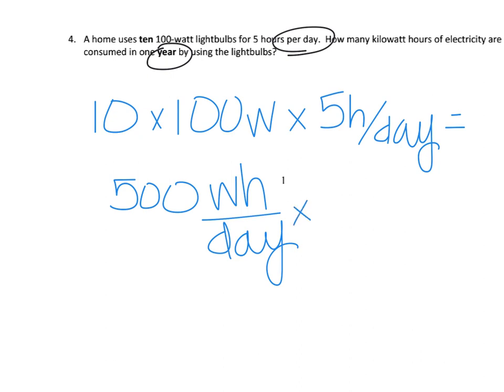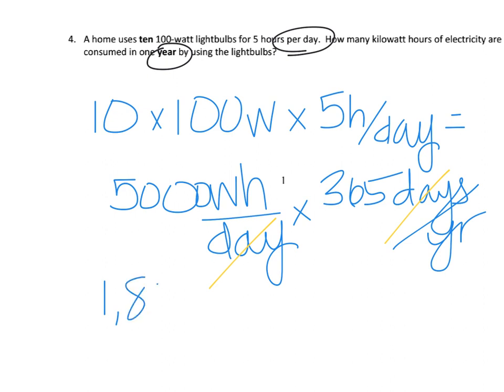So we have to multiply by—oops, sorry, I forgot a zero—it's 5000, not 500, times 365 days per year. And so our days cancel. When we do our calculation, we get 5000 times 365, and we get 1,825,000 watt hours per year.